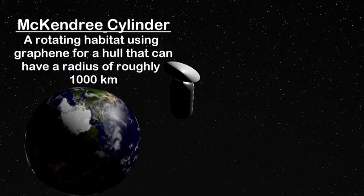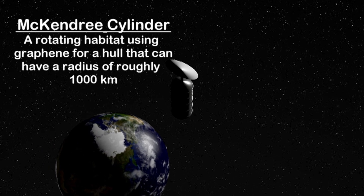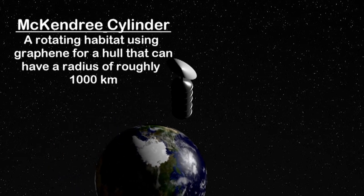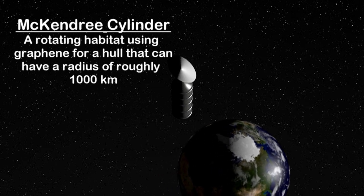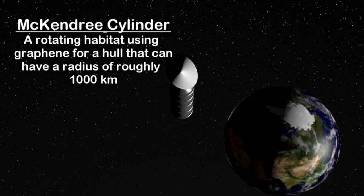And whereas an O'Neill Cylinder is basically a decent sized island populated by hundreds of thousands, a McKendree Cylinder is a continent class megastructure that could comfortably house a billion people.